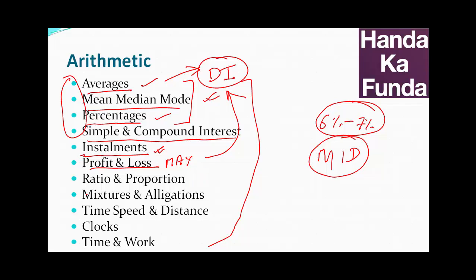Ratio and proportion is again an important concept to understand, and you may get a question on it. Mixture and allegation — you may get a question on it as well. The idea is that you may get a question on any of these topics, so these four — profit and loss, ratio and proportion, mixture and allegation — are in the least likely, or maybe, category.